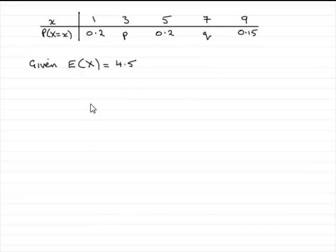We can just say that if we add these up we've got 0.2 plus 0.2 plus 0.15 that comes to 0.55, so therefore we've got 0.55 plus the P and the Q that's going to come to one.